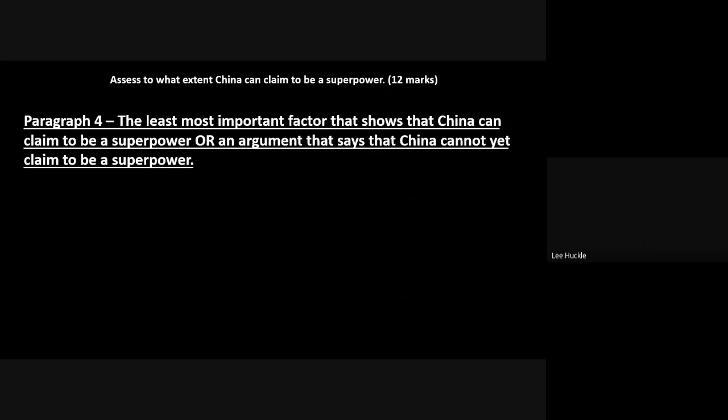For paragraph four there are two ways of approaching this. First, you could go down the normal route — the next most important factor showing China can claim to be a superpower. Or, because the question says 'to what extent,' you could present a counter-argument saying that China cannot yet claim to be a superpower. Pause it and think: which of those two routes would you take?